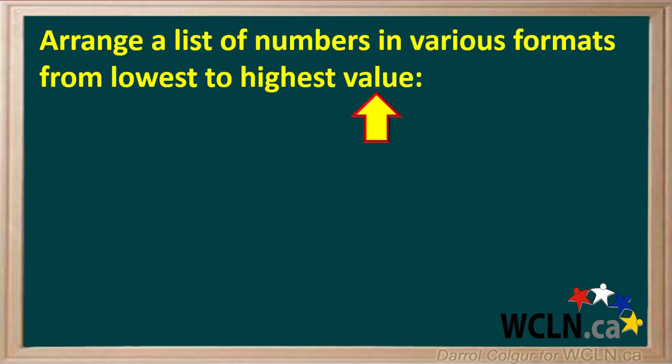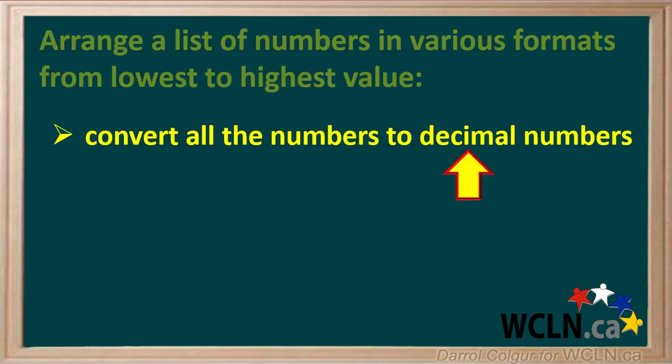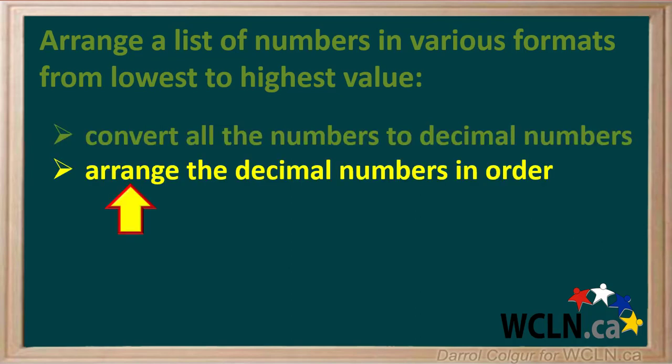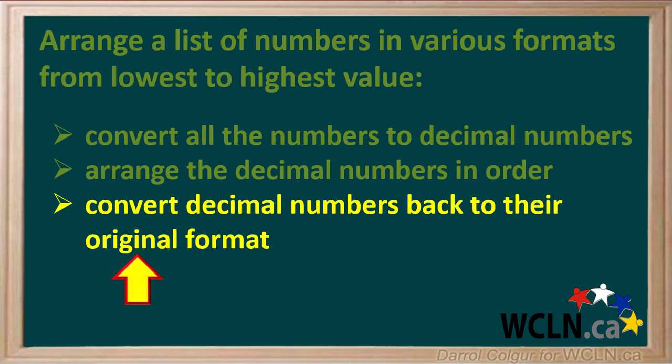If you're given a list of numbers in various formats and you're asked to arrange them in order from lowest to highest value, start by converting all the numbers to decimal numbers. If you recognize any perfect squares, perfect cubes, or other roots you may have memorized, you can convert these directly. For other numbers, use a calculator to determine the approximate decimal numbers — usually these can be rounded to two decimal places. Decimal numbers are all in the same format, so they're easy to compare. Arrange the decimal numbers in order from lowest to highest, then convert them back to their original format, keeping the order you determined.